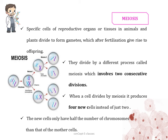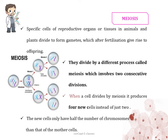Meiosis is a type of cell division that occurs in cells that give rise to gametes — like sex cells, eggs, or sperm. Specific cells of reproductive organs or tissues in animals or plants divide to form gametes which, after fertilization, give rise to offspring. Meiosis involves two consecutive divisions, and when a cell divides by meiosis it produces four new cells instead of just two. These new cells have only half the number of chromosomes of the mother cell. If you want to know more about mitosis and meiosis, leave a message in the comment section and I will provide a separate lecture on these topics.